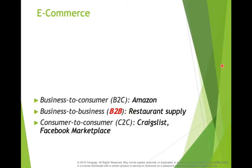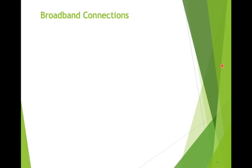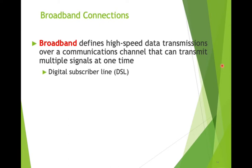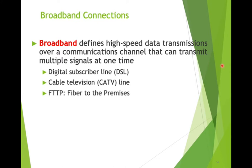E-commerce has been dramatically changed — think about the Amazon effect. During lockdown, everybody was ordering on Amazon, which shot through the roof as a major source for products. We should consider e-commerce terms: B2C (business to customer) is most familiar, but also B2B (business to business, like restaurant and supply) and C2C (customer to customer, like Facebook Marketplace). Connection types include broadband, DSL, CATV lines like Suddenlink, and fiber to premises used by Google and Comcast, which is even faster.